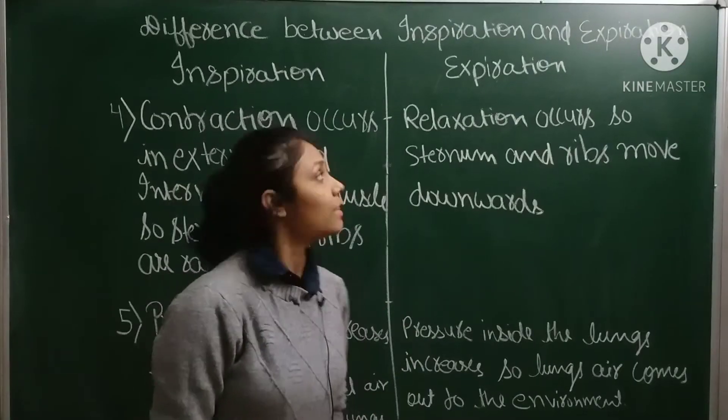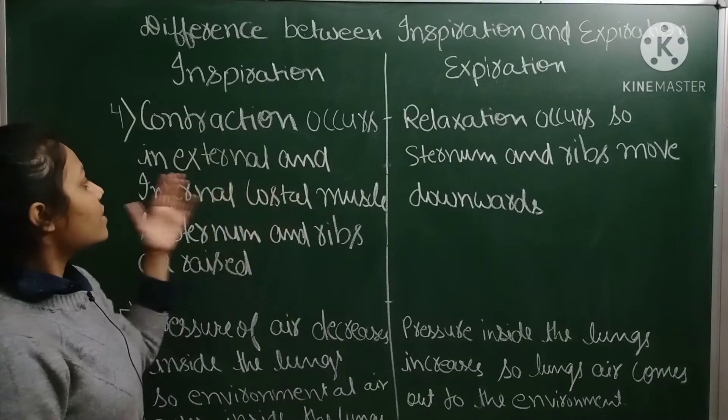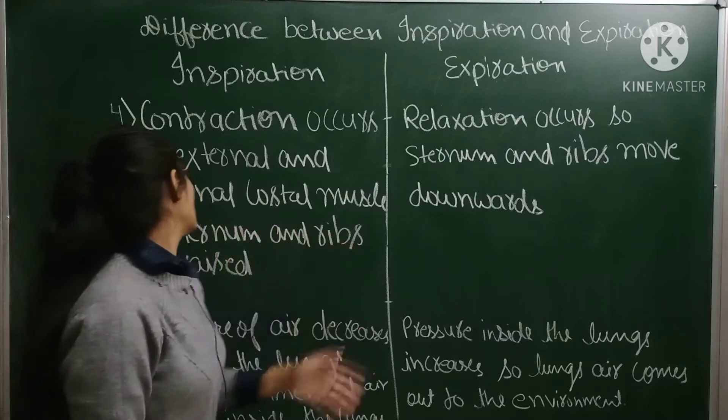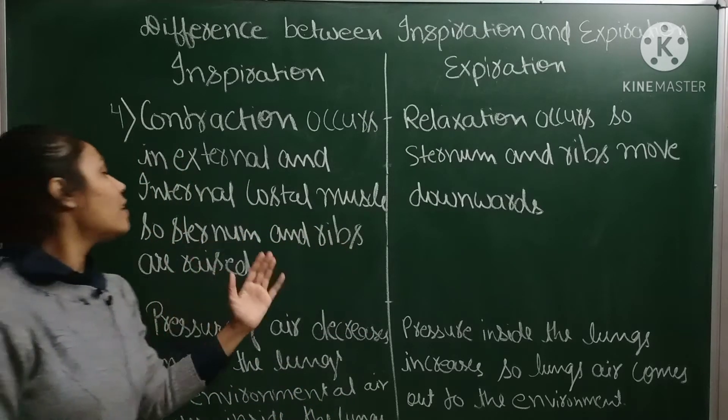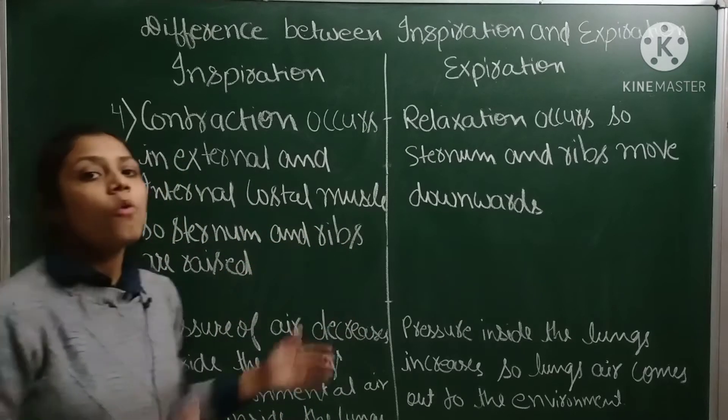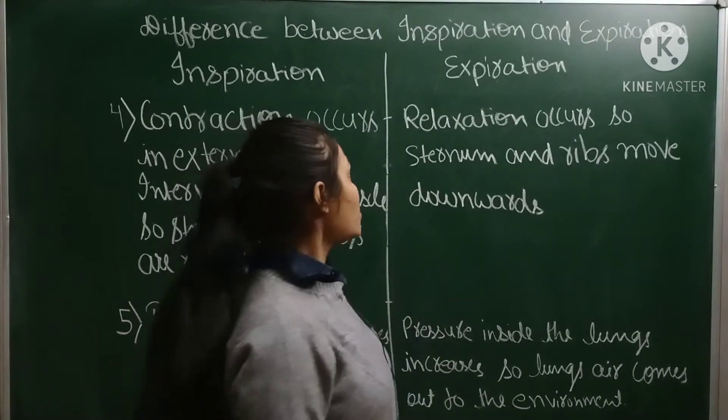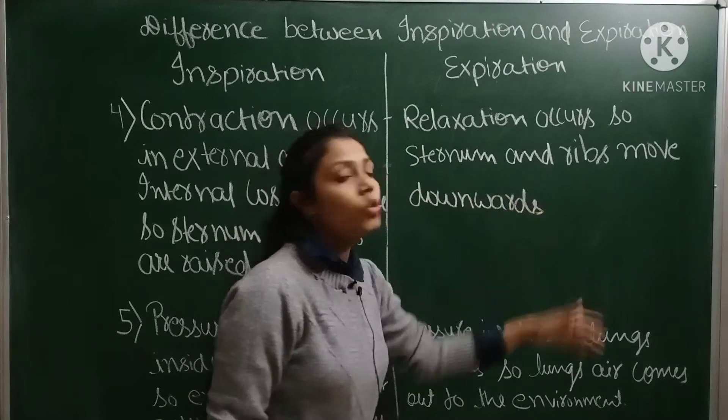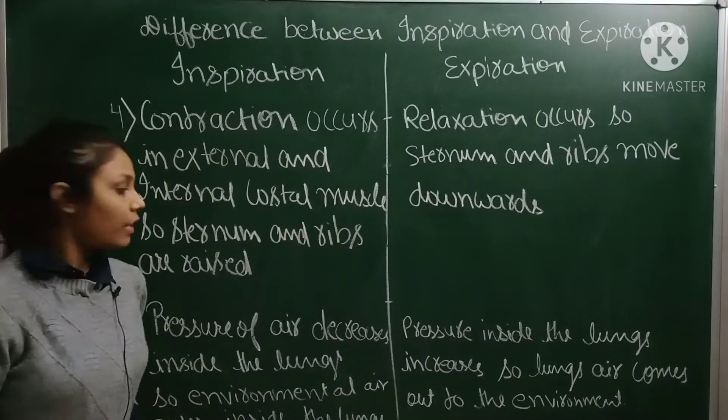Next point: contraction occurs in external and internal costal muscles, so the sternum and ribs are raised. Whereas in expiration, relaxation occurs, so the sternum and ribs move downwards.